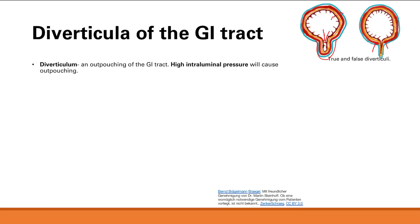This most commonly occurs where the vasa recta penetrate the muscularis externa — this is the area where the muscularis externa is weak. For true diverticula, the main one we're going to talk about is Meckel's diverticulum, and we'll cover that in a bit. The rest are going to be false diverticula.